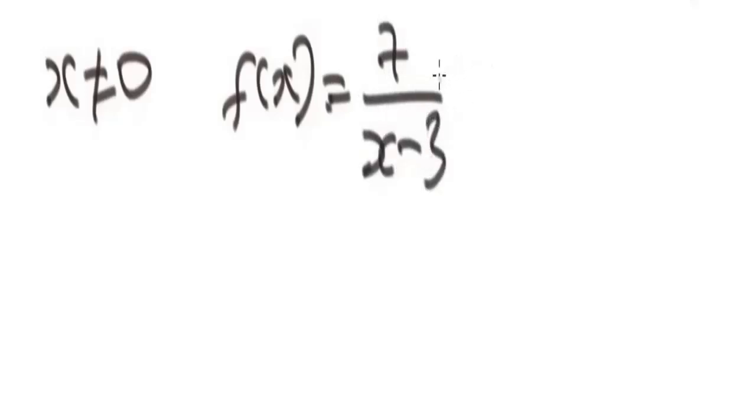So let's look at this particular example. We are given f of x equals seven over x minus three. Whenever you are given this kind of expression, first of all, don't consider the numerator value, you work with the denominator value. So it will be x minus three, not equal to zero.